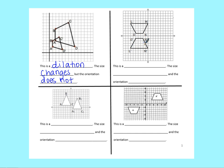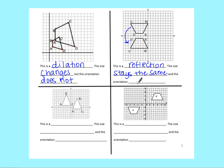Our second example has trapezoid LMNO and L'M'N'O'. It looks like a mirror image, flipping across the x-axis — that's going to be a reflection. Remember: 'fl' means flip. In a reflection the size stays the same, but the orientation will change. Notice it's kind of upside down once you flip it over, so the direction in which the shape is facing changes.